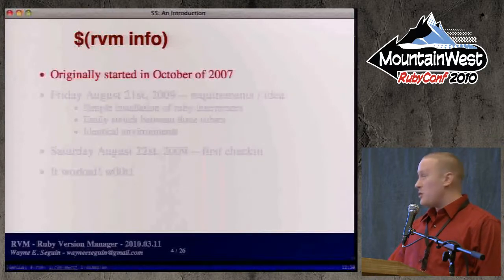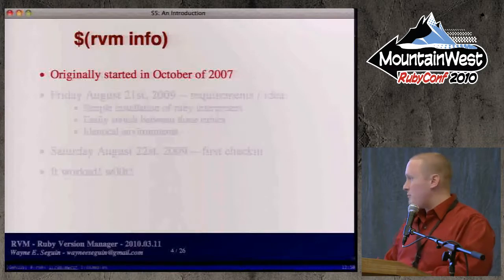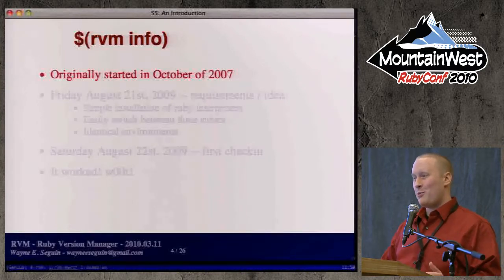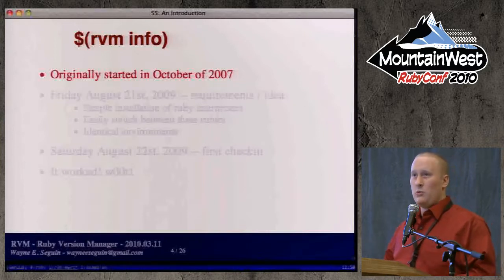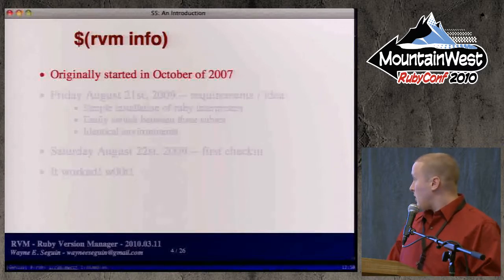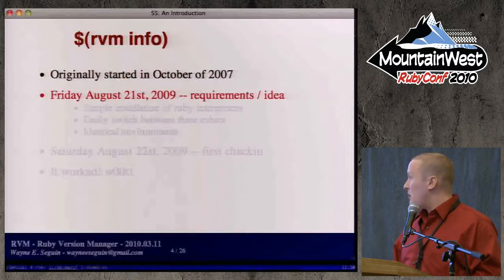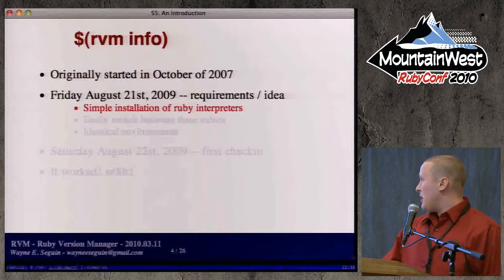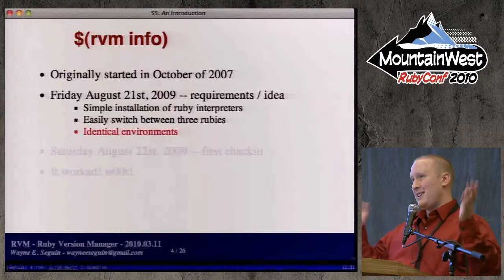RVM originally started October 2007. I started the conversation with a co-worker, Jim Lindley — best UI guy I've ever met. We had a problem where we had four applications and each had to run on a different interpreter. We were using Ruby Enterprise Edition for one app, JRuby for another, and a brand new app we decided to go with 1.9 because the performance characteristics are just phenomenal. We had three simple requirements: easily install the Ruby interpreters we were going to use, easily switch between them, and have the environments — development, staging, testing, CI, demo, and production — be identical.